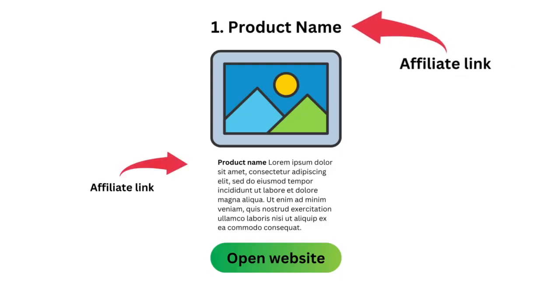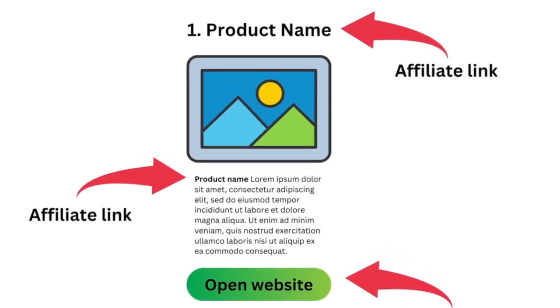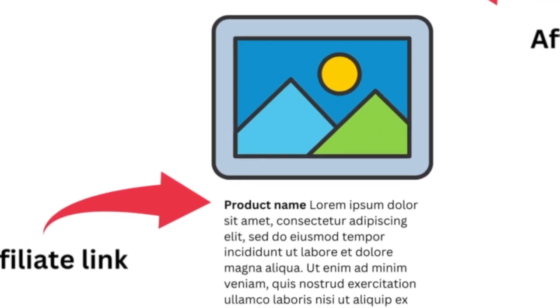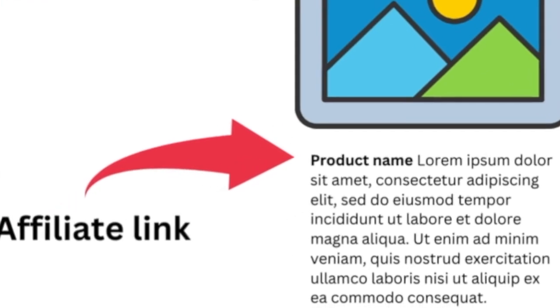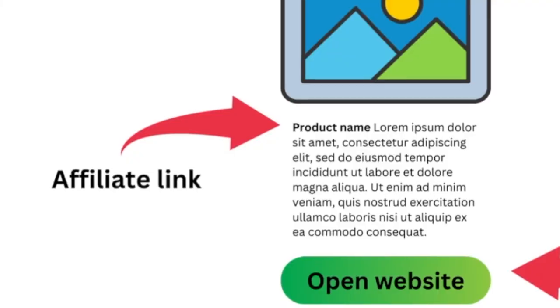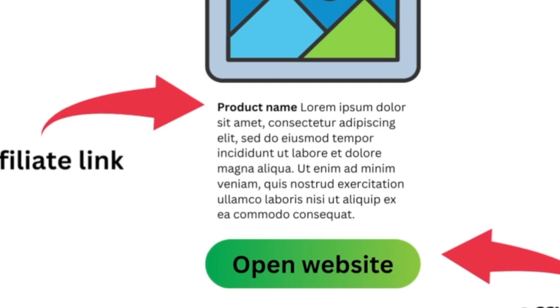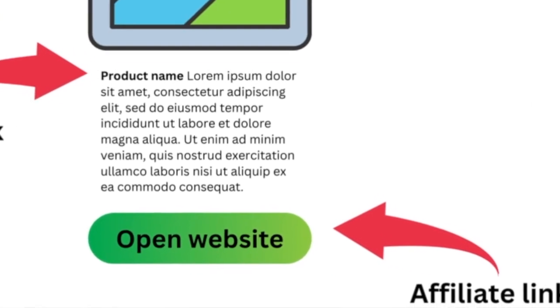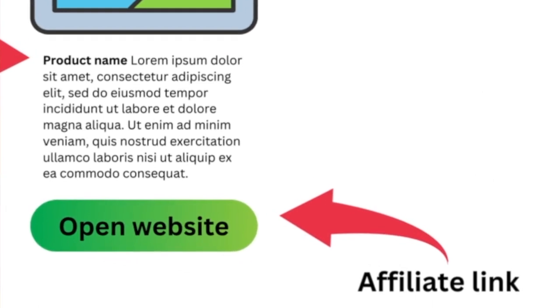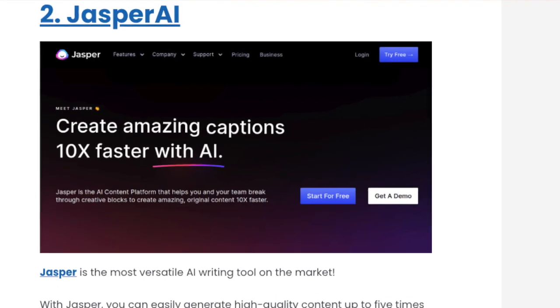In a roundup post, a common way to do this is to add an affiliate link to the name of the product, then introduce the product to the reader — you can start that with an affiliate link as well — and then at the end you also add an affiliate link such as 'try for free' or 'buy at nike.com' or whatever. Then you move on to the next product or service in line.